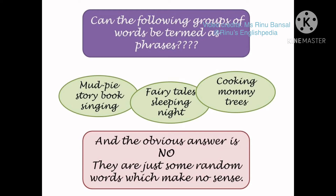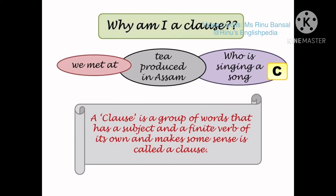To better understand this, consider some examples. In the first oval: mud pie, storybook, singing. In the second: fairy tales, sleeping, night. In the third: cooking, mommy, trees. Can we call these random words phrases? No — they make absolutely no sense. A phrase must be a group of words that makes some sense, even if not complete.